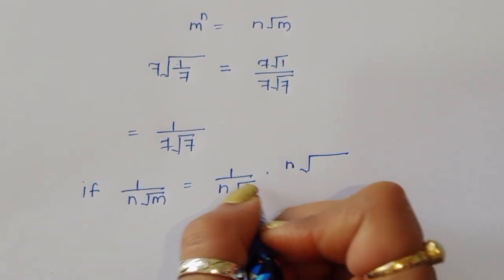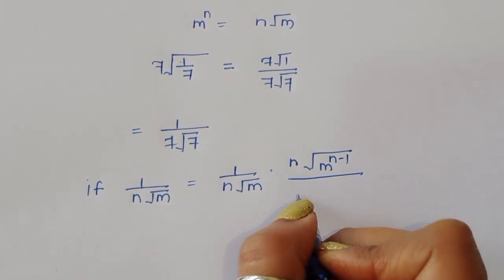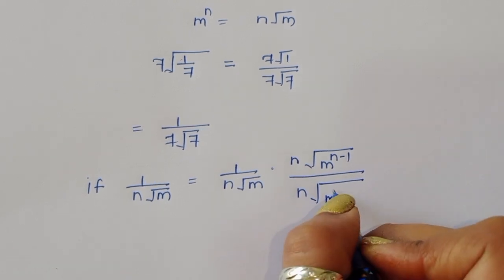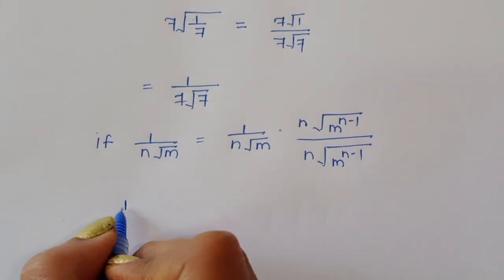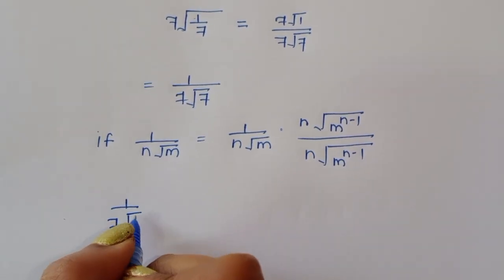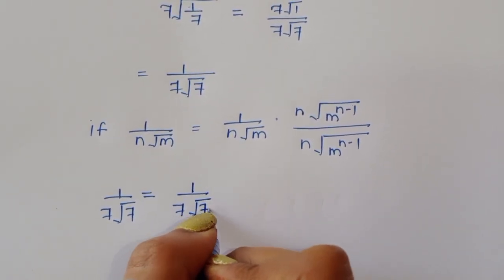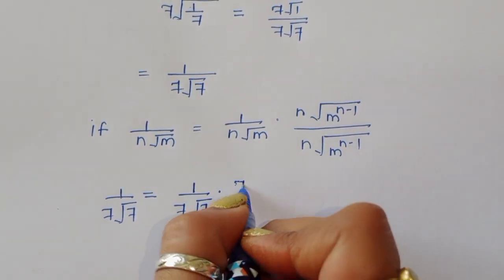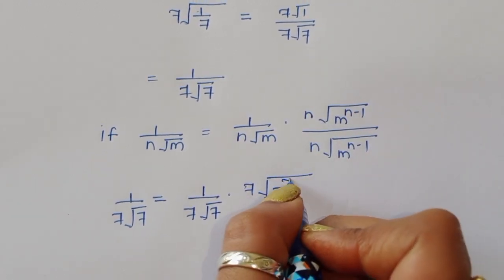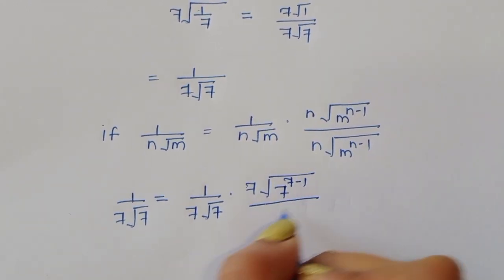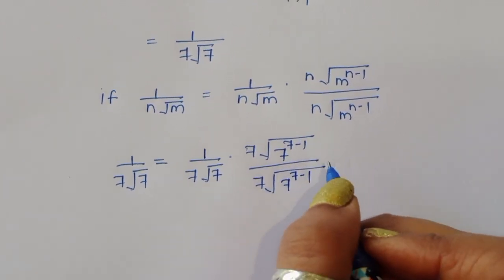The formula is: 1 upon nth root of m equals nth root of (m^(n−1)) divided by nth root of (m^n). Applying this formula here, 1 upon the 7th root of 7 equals the 7th root of 7^(7−1) divided by the 7th root of 7^7, where n = 7 and m = 7. So 7 minus 1 gives us 6.